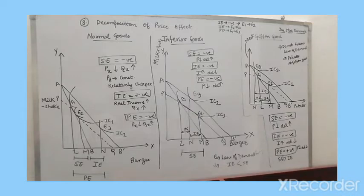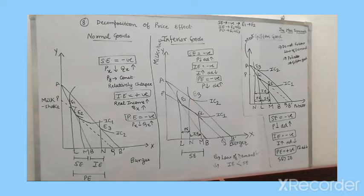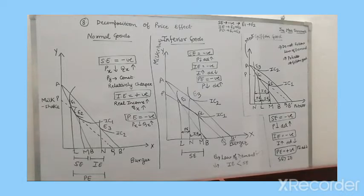In income effect, the quantity or demand changes when the price of a commodity changes and the consumer's real income also changes. So income changes and quantity demanded changes due to that — that is income effect. What is substitution effect? Change in consumption of goods as change in relative price, while real income remains the same. In the case of substitution effect, income is kept constant.